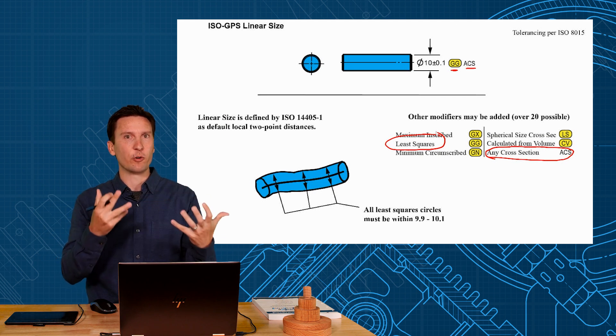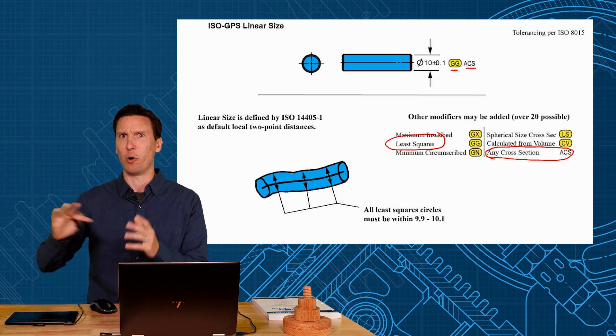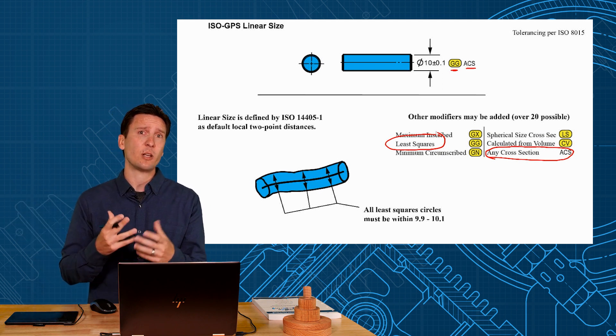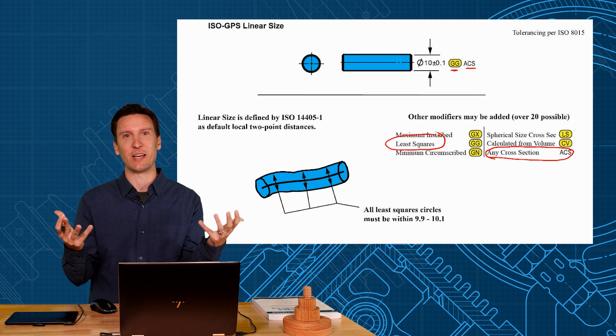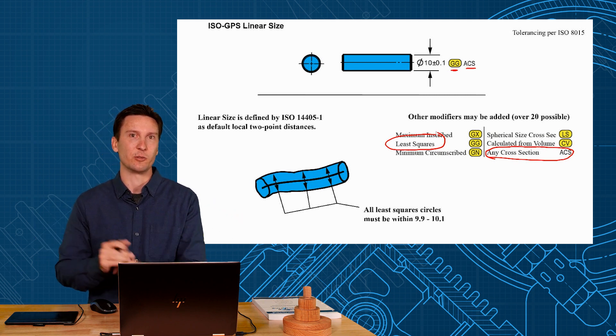So ISO has a lot more versatility in defining what size is but you have a lot of modifiers and most of them you probably never want to use but they do have a lot more options. So it is a more advanced system I would say, ISO standards, but not as user friendly because of all the different options you could end up picking.